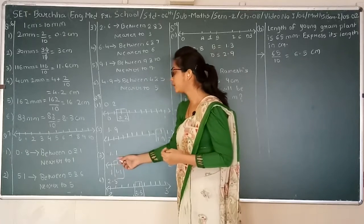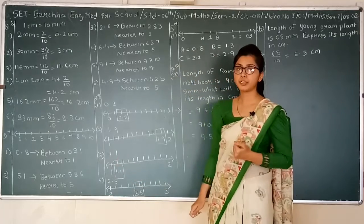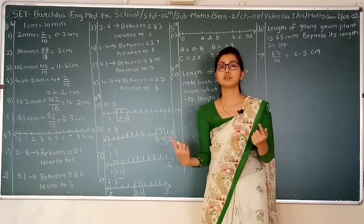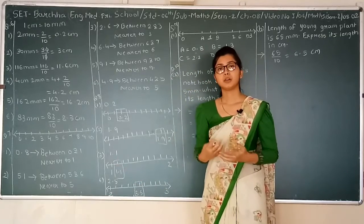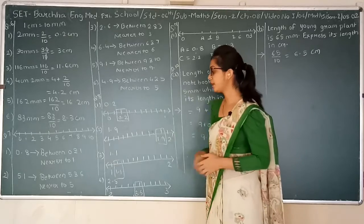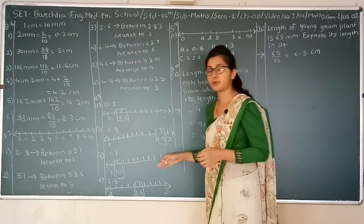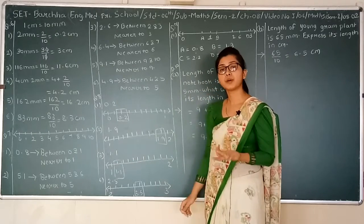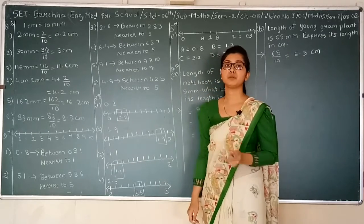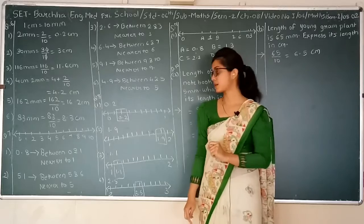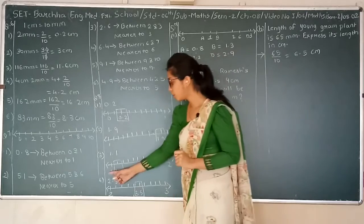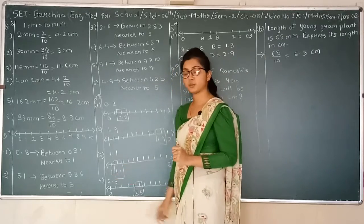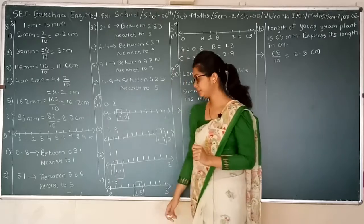Next one: 1.1. Again, 1.1 will be between 1 and 2. Draw a number line and plot 10 divisions in between. 1.1 will be just after 1, so write 1.1 and highlight it with a square.